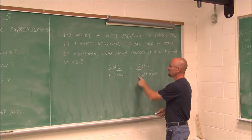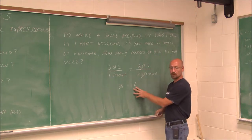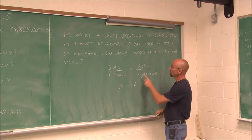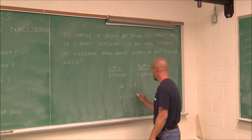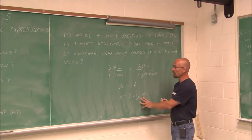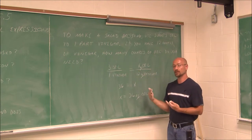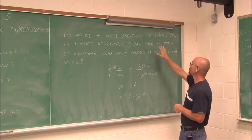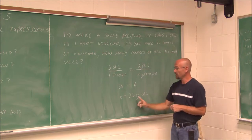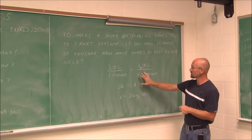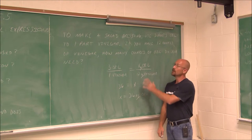I cross multiply because it is a proportion. 12 times 3 is 36, and 1 times x is x, so x equals 36. That represents 36 ounces of oil required when making a salad dressing with 12 ounces of vinegar. Reading the problem one more time to verify: is the ratio of 36 to 12 equal to 3 to 1? Yes it is. I found ounces of oil, the right units, and the answer makes sense.